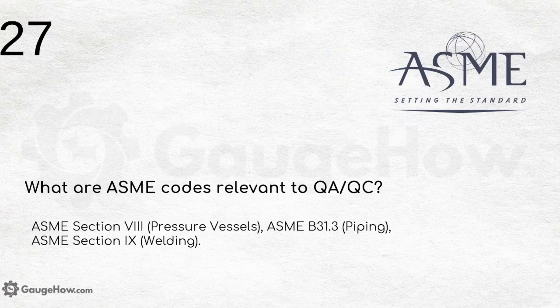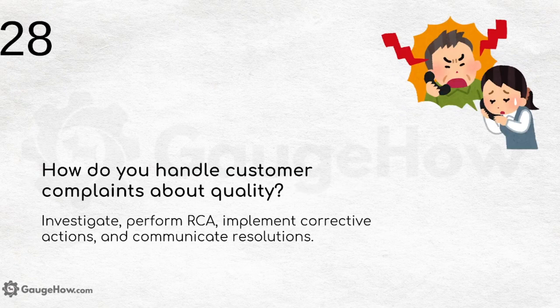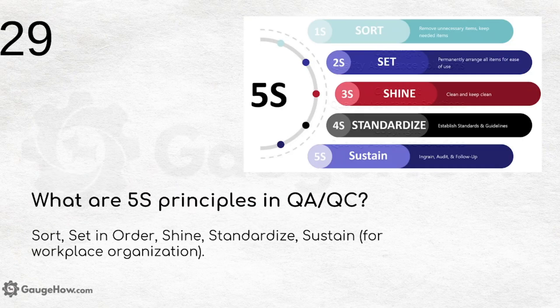What are ASME codes relevant to QA or QC? These include ASME Section 8 for pressure vessels, ASME B31.3 for piping, and ASME Section 9 for welding. When handling customer complaints about quality, you should investigate, perform root cause analysis, implement corrective actions, and communicate resolutions.